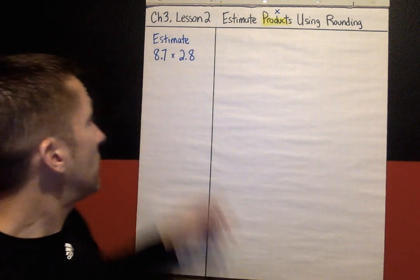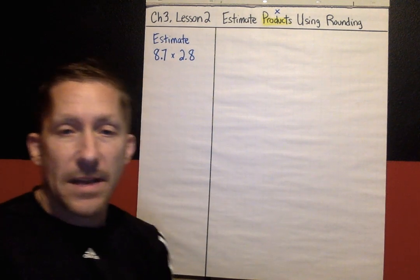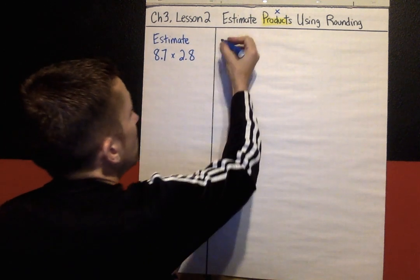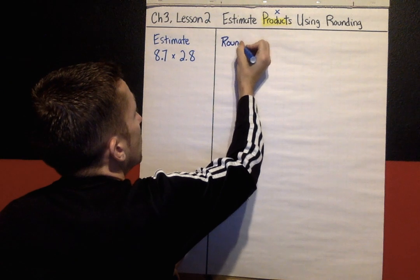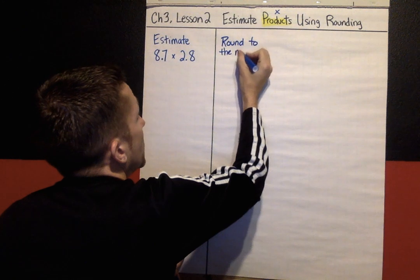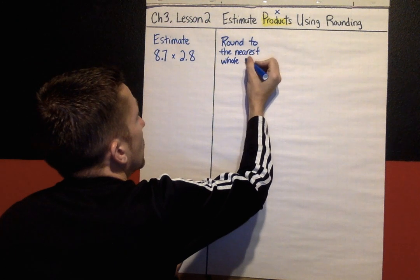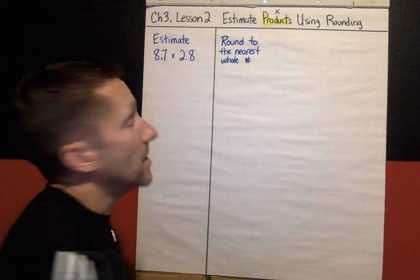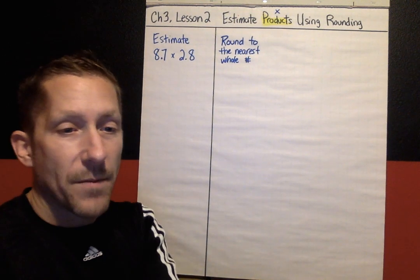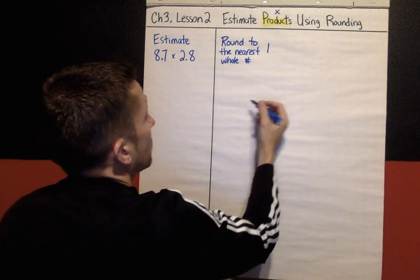The first problem we're going to look at is how would we estimate 8.7 times 2.8. What we're going to do first is round to the nearest whole number. We're going to round both of these decimals, 8.7 and 2.8, to the nearest whole number. I'm going to model my thinking on a number line for both of these.